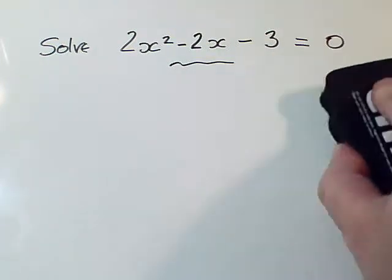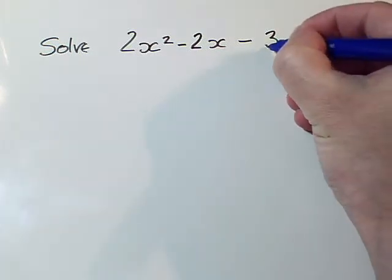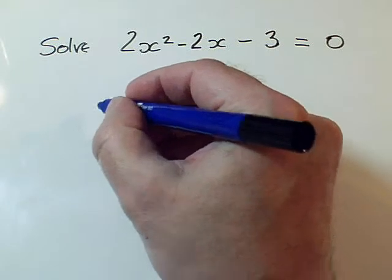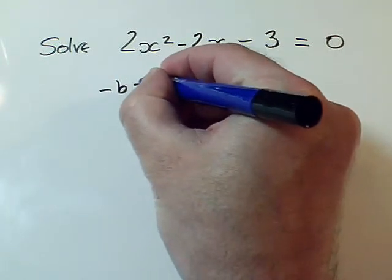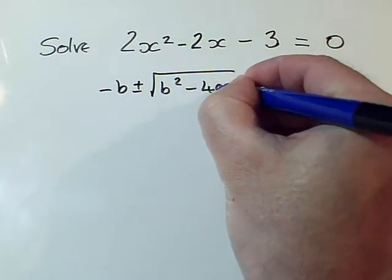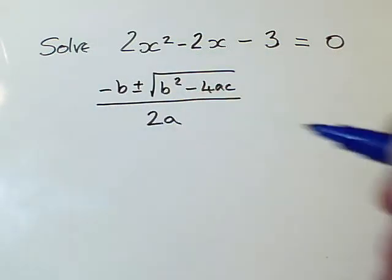So we go to our backup plan, and our backup plan is to apply the quadratic formula, which you need to learn. Minus b plus or minus the square root of b squared minus 4ac all over 2a. This is not in the formula booklet, you have to learn that.